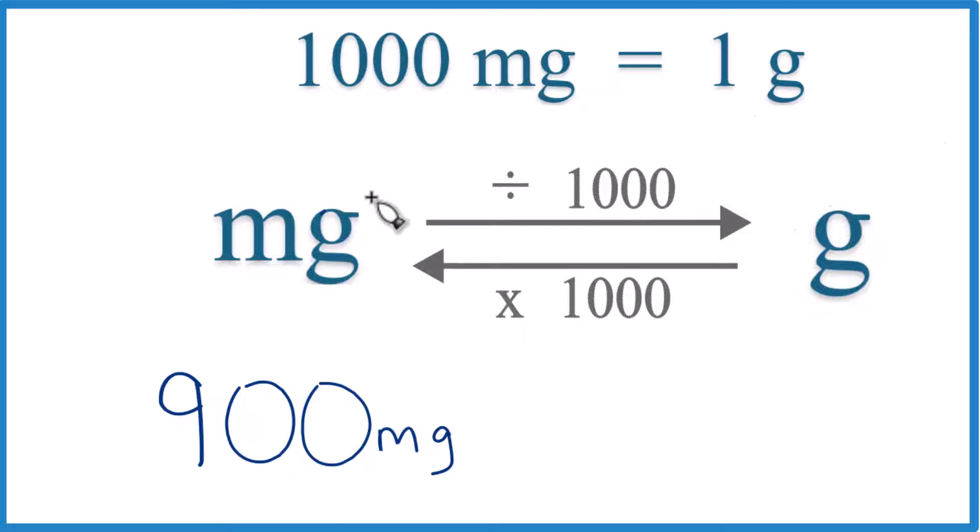Here we have 900 milligrams. So milligrams to grams, we divide by 1,000, like this.